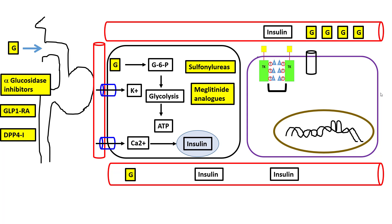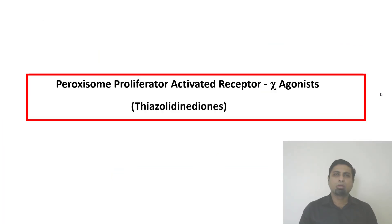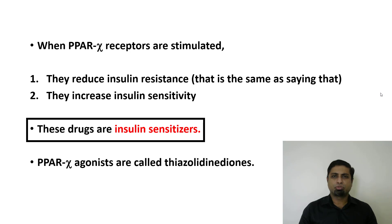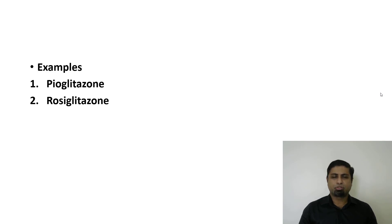There is a receptor that resides in the nucleus of almost all cells in the body called the PPAR-gamma receptor — the peroxisome proliferator-activated receptor gamma. When this receptor is stimulated, it reduces insulin resistance, or in other words increases insulin sensitivity. There is increased translation of proteins including glucose transporters, resulting in a reduction in plasma glucose. These drugs are also called thiazolidinediones, examples of which include pioglitazone and rosiglitazone. They are called insulin sensitizers, not insulin secretagogues.